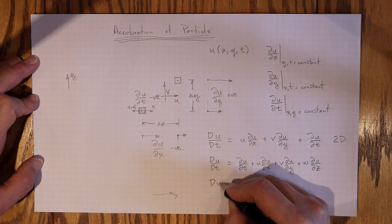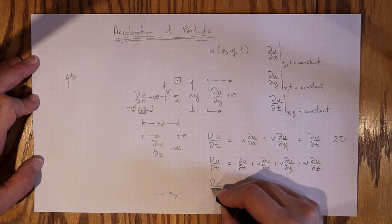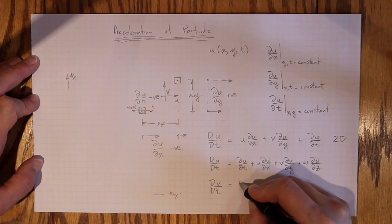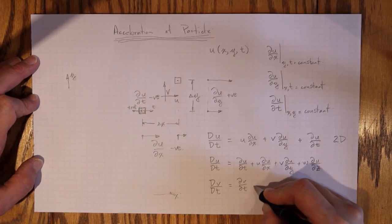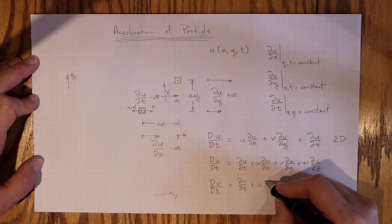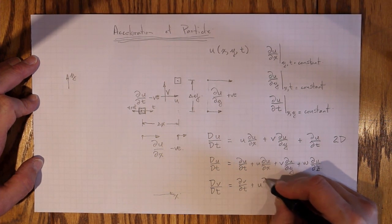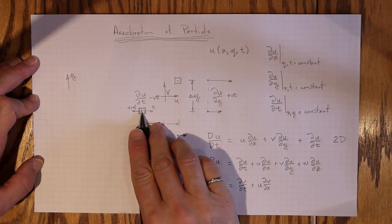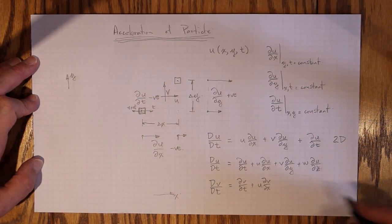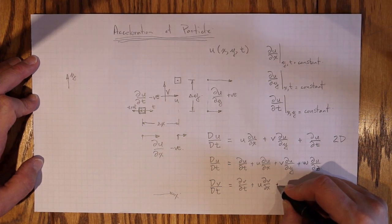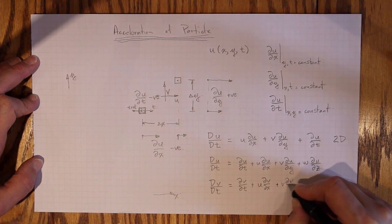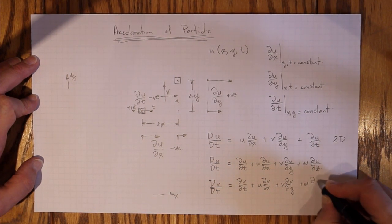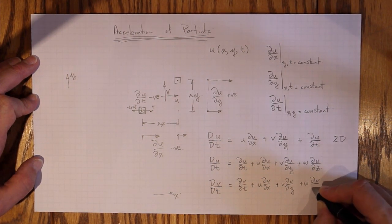And there will also be an acceleration, for example in the y direction. Dv/Dt, the acceleration in the y direction, equal to ∂v/∂t plus a term for how much it moves in the x direction. This time ∂v/∂x because we're interested in how much v changes as we move from here to here. Plus v∂v/∂y, plus w∂v/∂z.